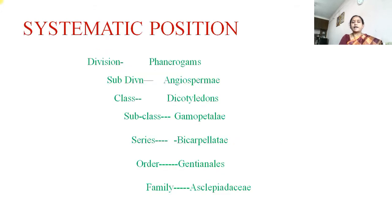The systematic position: Division - Phanerogam, Subdivision - Angiospermia, Class - Dicotyledon, Subclass - Gamopetalae, Series - Bicarpellatae, Order - Gentianales, and Family - Asclepiadaceae. This is the systematic position of this family.